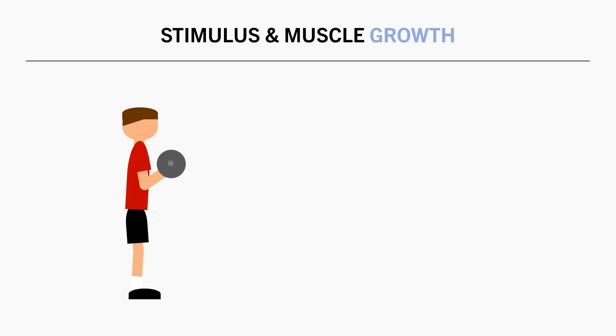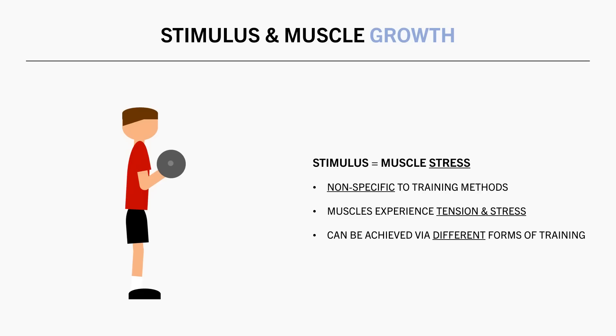However what we do understand is that the stimulus is simply a stress to the muscle. The muscle doesn't know what load is on the bar or even whether you are using a barbell, dumbbell or machine. All that the muscle experiences are tension and stress. This can be achieved via many different forms of training including both bilateral and unilateral exercises.